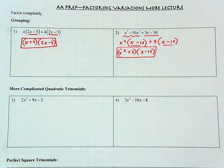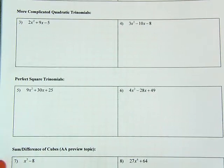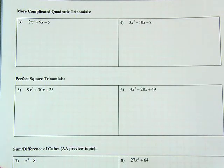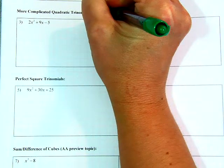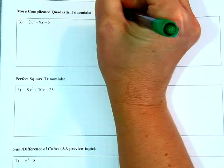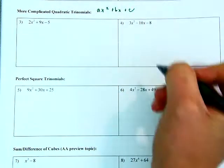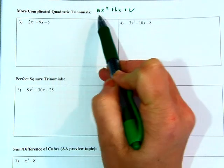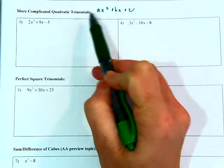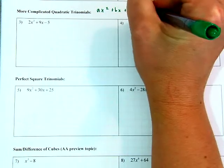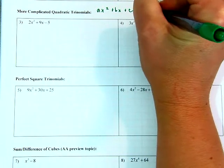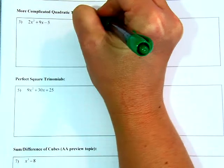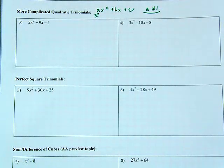Next we're looking at more complicated quadratic trinomials — what happens when that leading coefficient is not 1. So I'm looking at ax squared plus bx plus c — that's a quadratic trinomial. The highest degree term is quadratic, there are three terms (that's the trinomial part), and the key identifier is that the a value is not 1.